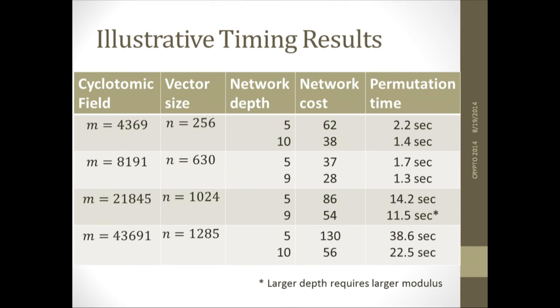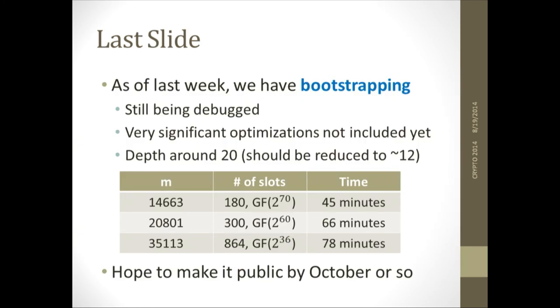I wanted to show you a few numbers. m is the size of your lattices, it depends on the security parameter and the depth. Roughly the depth of the circuit that you can evaluate is m over a thousand, so this is good for depth four circuits, this is good for depth 40 circuits. You can see that the time to implement an arbitrary permutation here ranges between a second or two to slightly under a minute.